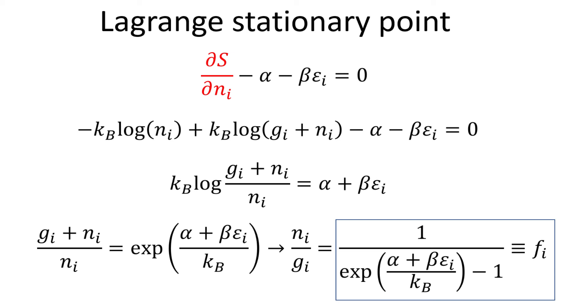This occupation factor is the Bose-Einstein distribution function we are after, and what is left is only to determine the Lagrange multiplier constants alpha and beta.